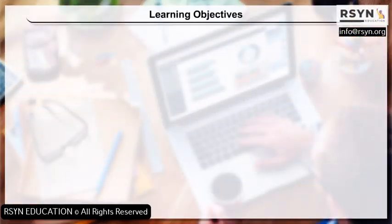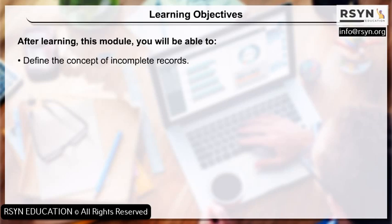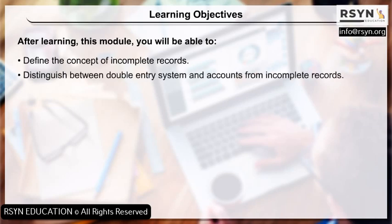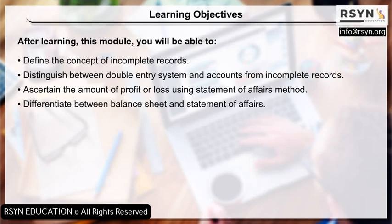Learning Objectives: After learning this module, you will be able to define the concept of incomplete records, distinguish between the double entry system and accounts from incomplete records, ascertain the amount of profit or loss using the statement of affairs method, differentiate between balance sheet and statement of affairs, and prepare a statement of affairs using given data.